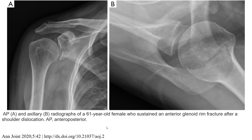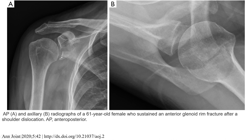First example of a glenoid fracture: Image A is the AP view and image B is the axillary radiograph of a 61-year-old female who sustained an anterior glenoid fossa fracture after shoulder dislocation. As we can see, there is a fracture fragment with a lucency line fracture with displacement.